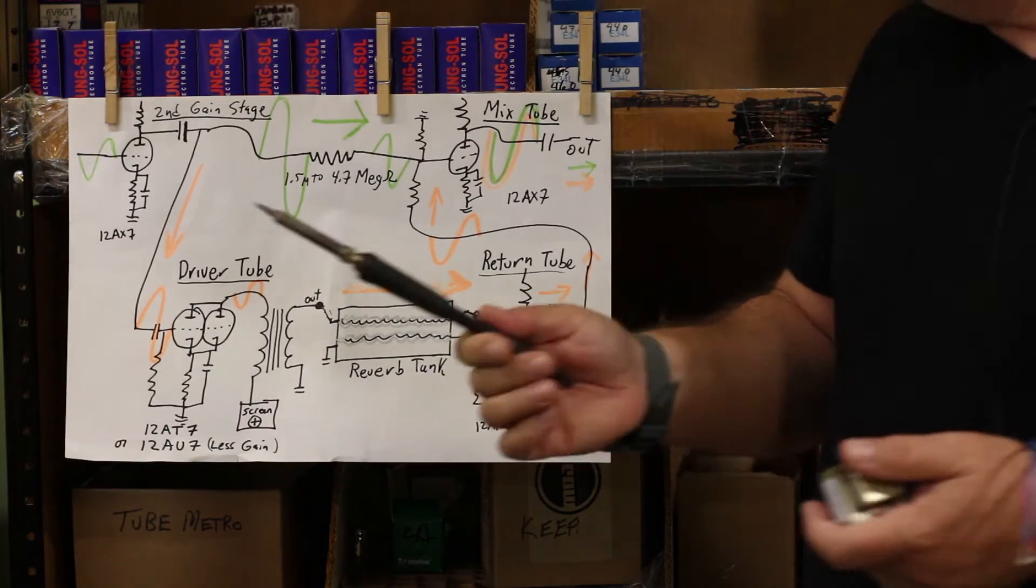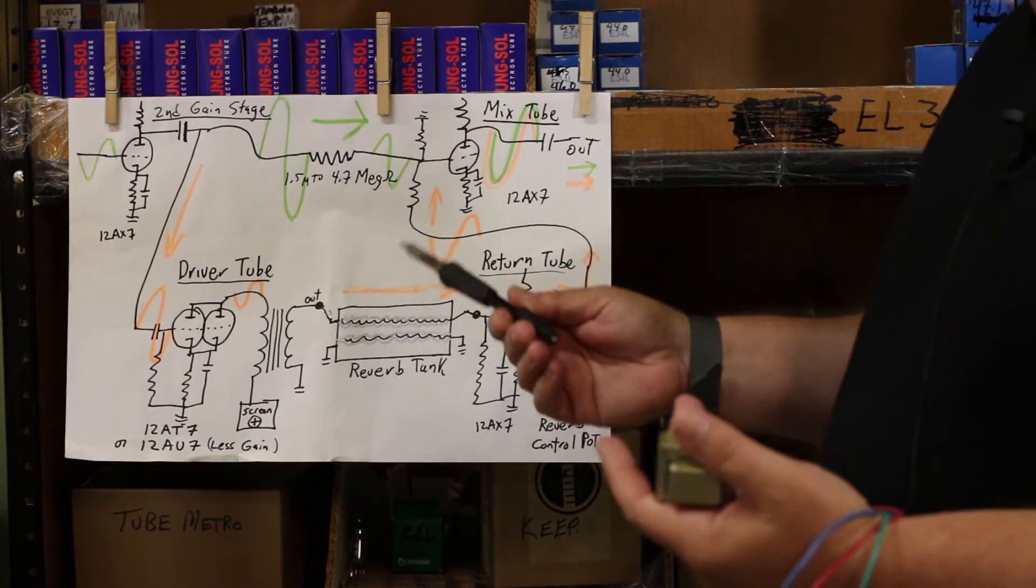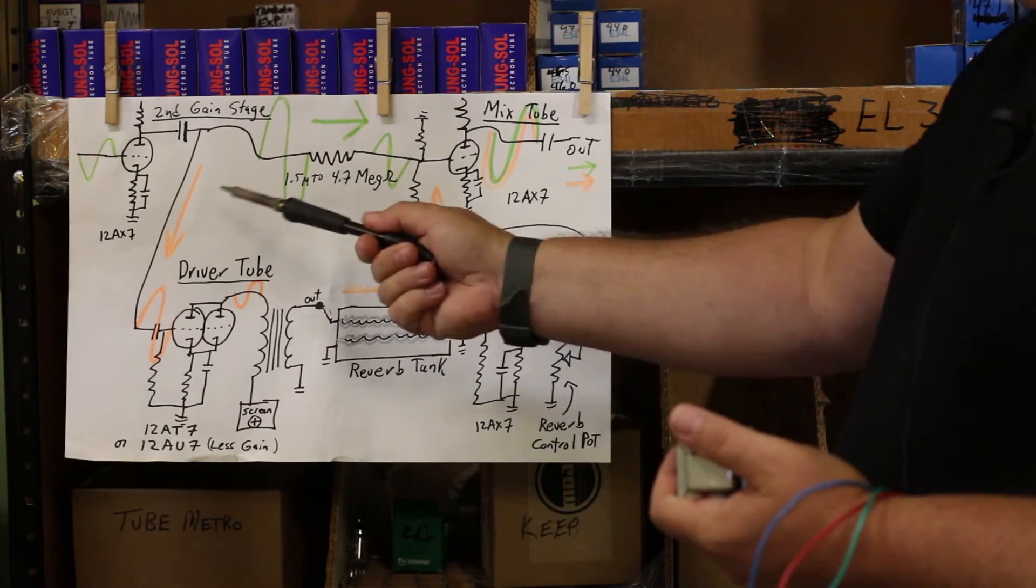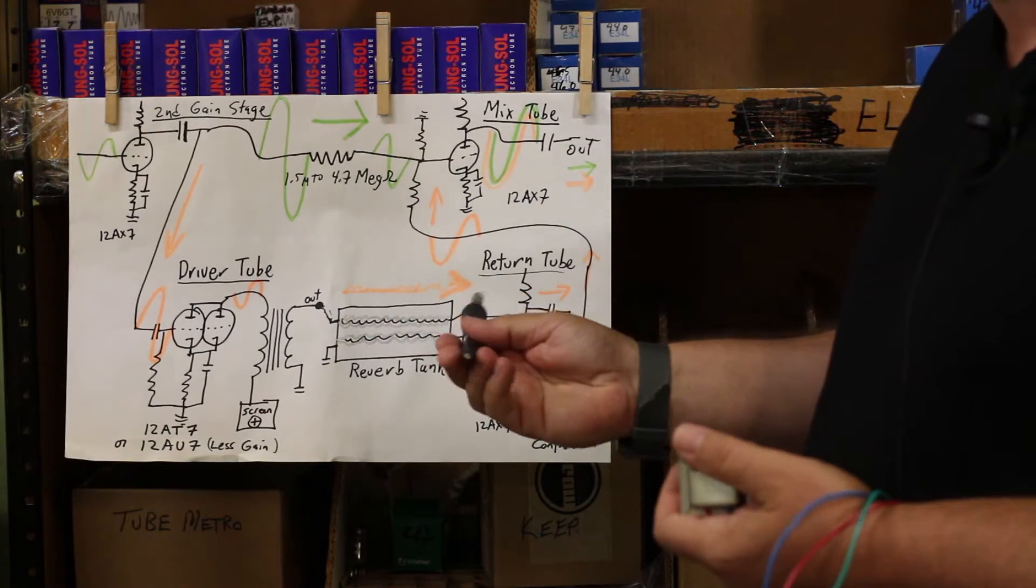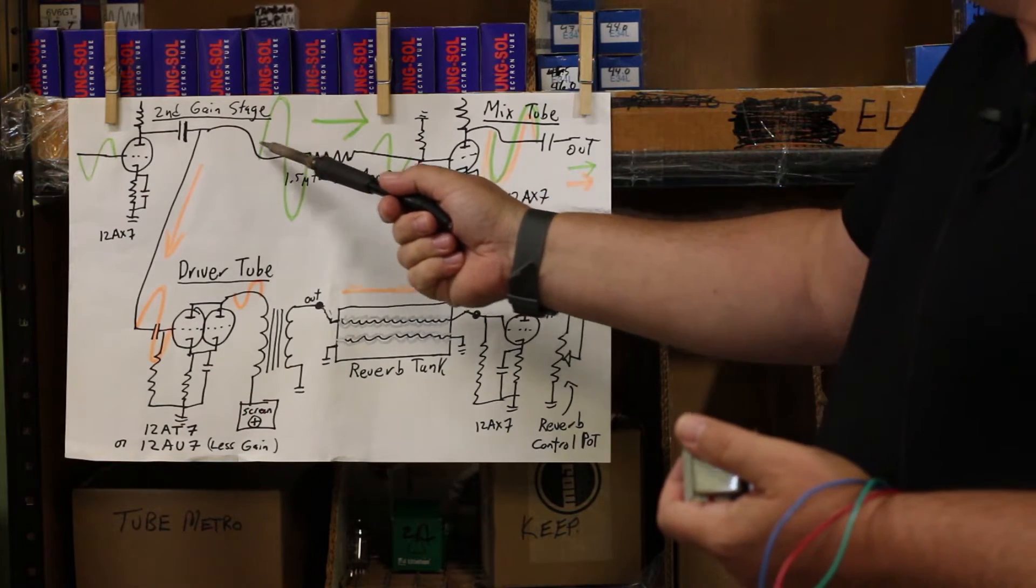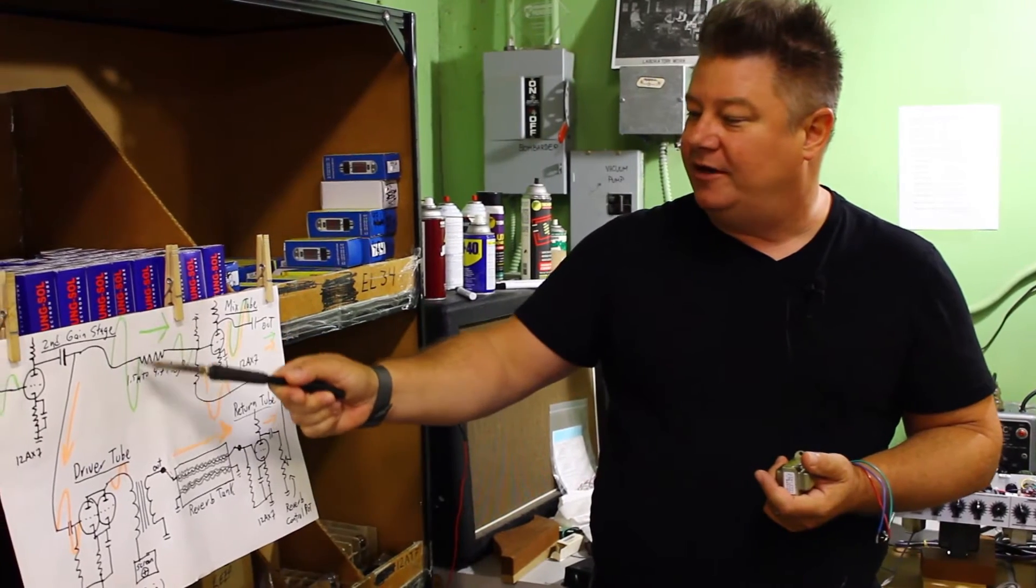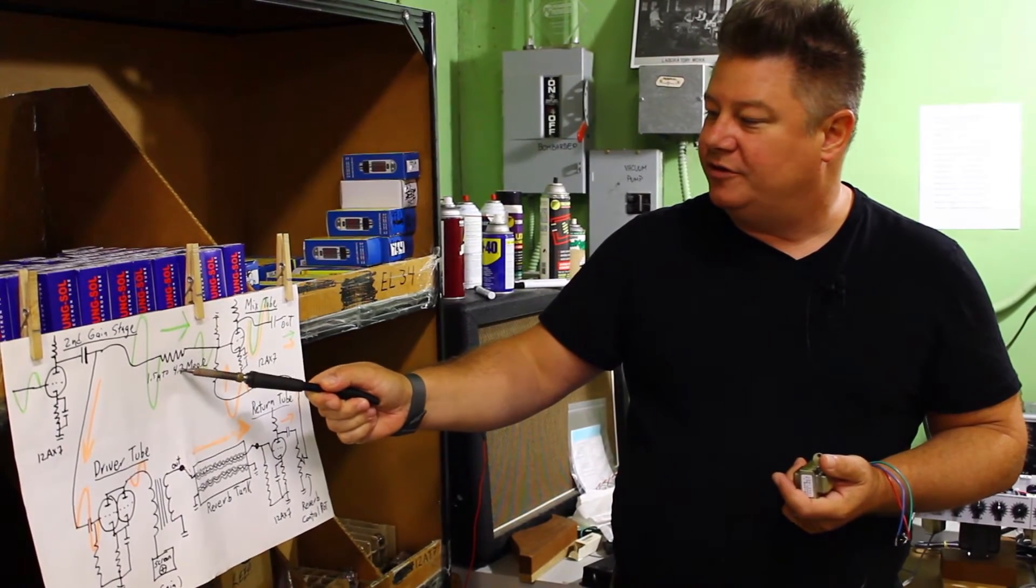Now here's an important part of the reverb circuit. Basically, what Fender did here way before we hear about it in modern amps is this is a parallel effects loop. So we've got the signal coming along, and the guitar signal, which again has been amplifying, it's really big, hits this large resistor.